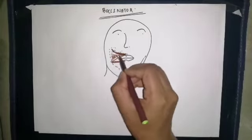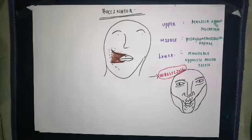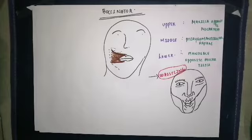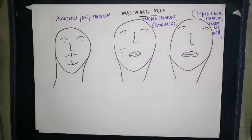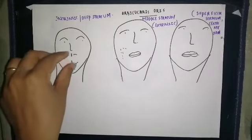The function of the buccinator muscle: it is the whistling muscle. More importantly, it flattens the cheek against the gums and teeth, which prevents accumulation of food in the vestibule. Regarding facial expression, it is associated with whistling.